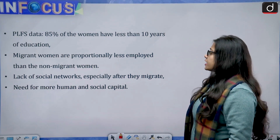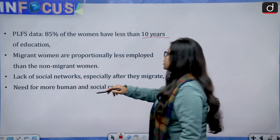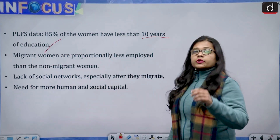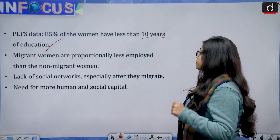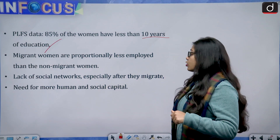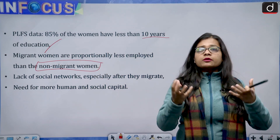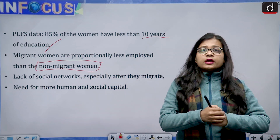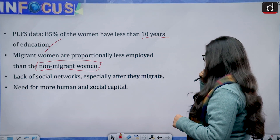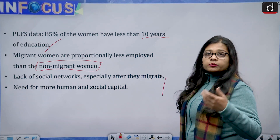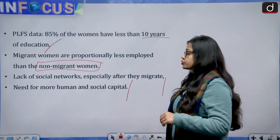PLFS data shows that 85 percent of women have less than 10 years of education, which is one of the reasons why formal sector employment participation is low among women. Migrant women are proportionally less employed than non-migrant women because non-migrant women develop a social circle in their home area that helps them find employment. After migration, there is a lack of social network, making it difficult to find new jobs, highlighting the need for greater human and social capital.